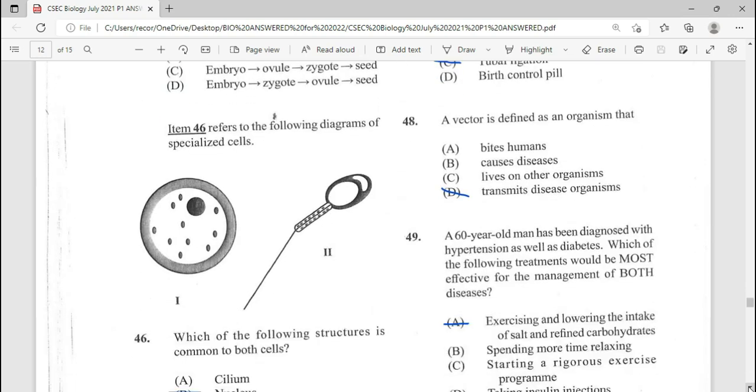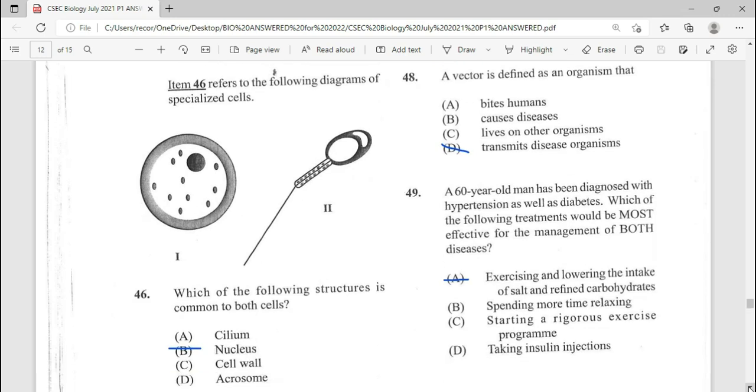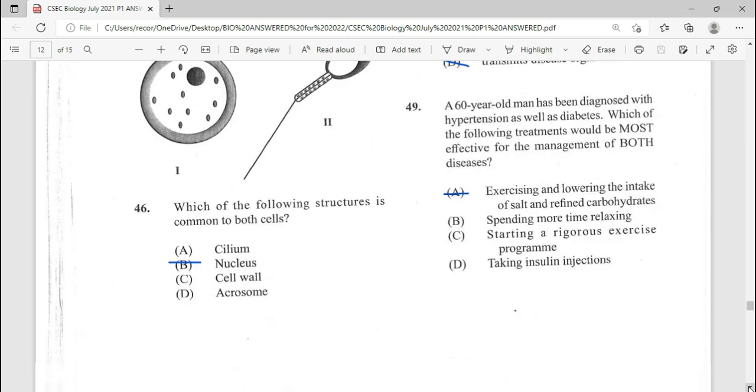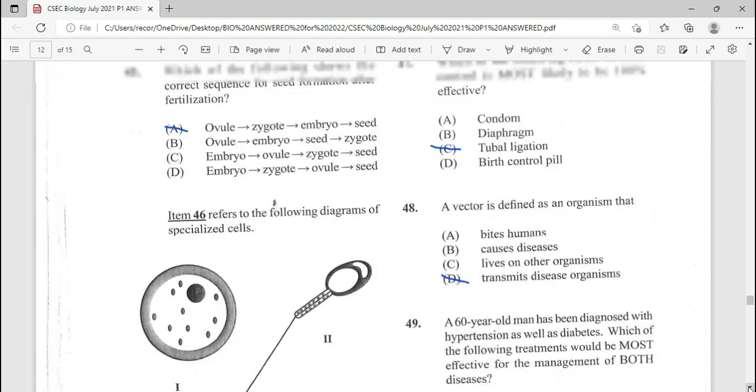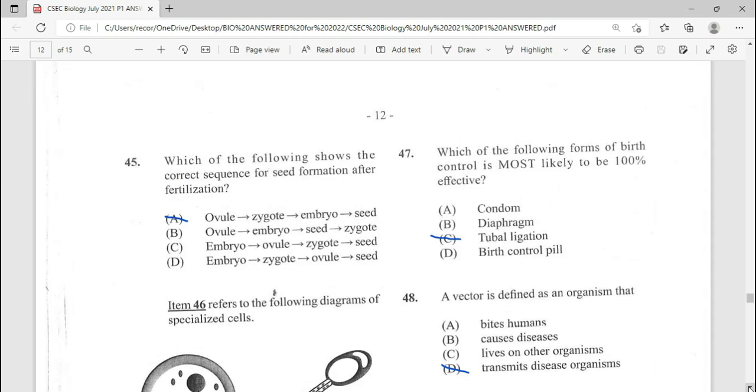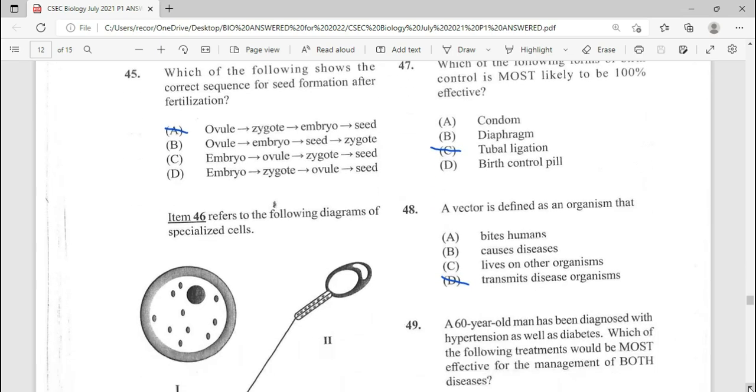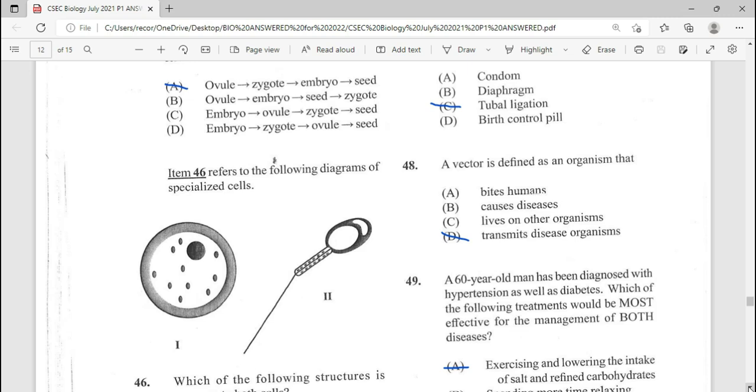Now 46 is a repeated question. Which of the following structure is common to both cells? So it refers to the diagram of specialized cells. So the nucleus is common to both cells. Moving on to question 47. Which of the following forms of birth control is most likely to be 100% effective? Tubal ligation. C is our answer. A repeated question. And this has been repeated in many forms.